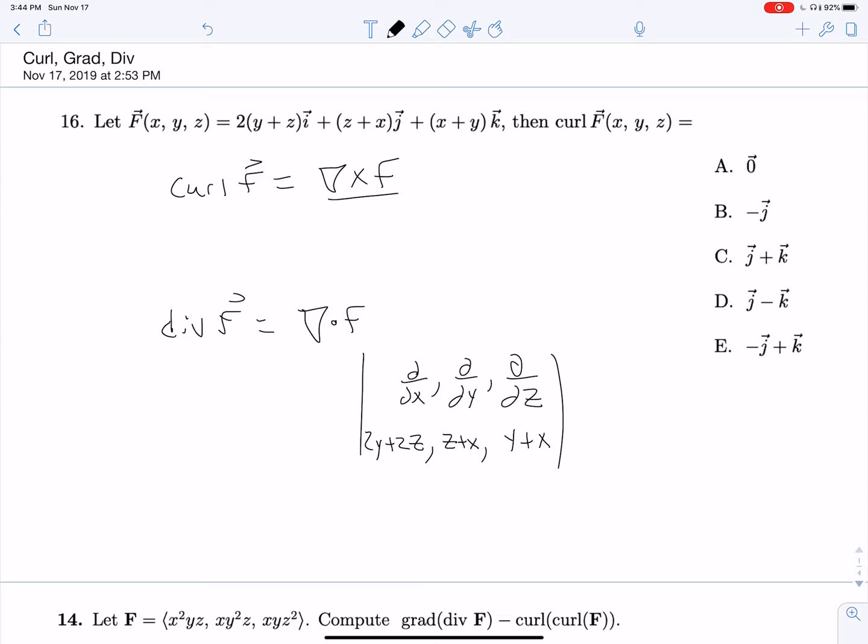And so now taking our cross product, we will get 0, 0, negative 1.